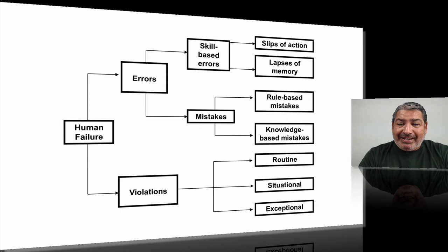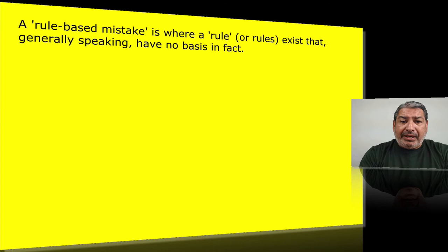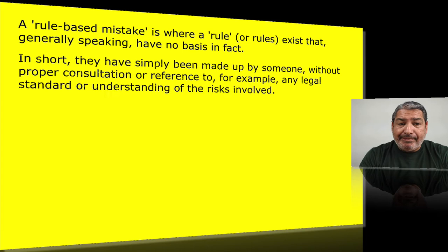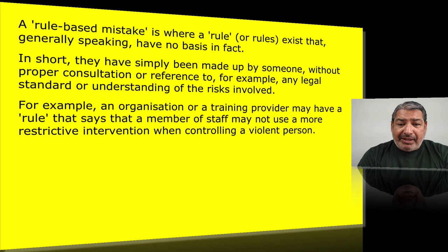A rule-based mistake is when someone makes up a rule. In an organisation, someone in a position of authority is expected to know what they're talking about, and when asked for advice they make up rules. Generally speaking, these rules have no basis in fact whatsoever — they're made up without proper consultation or reference to any legal standard or understanding of the risks involved. We get a lot of panels set up in the UK for things like restraint reduction, and they come up with stuff that people who work the front line know won't work.